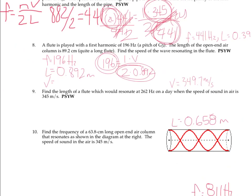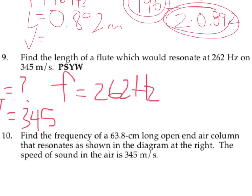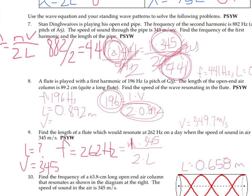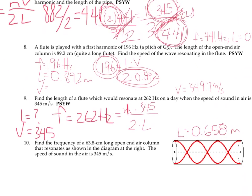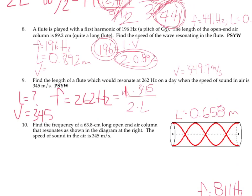For number nine, you're asked to figure out again the length of the flute. So the length is our unknown variable. We're given a velocity, which is still 345 meters per second. We're told frequency, 262 hertz, which we're going to go ahead and treat as the fundamental, or first harmonic, and solve using that same equation one more time. So 262 hertz equals n, which is just 1, times 345, divided by 2 times the length. And just like we did up here with number seven, you're solving for length, and should get 0.658 meters as an answer here.